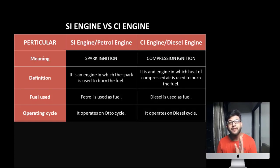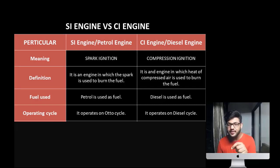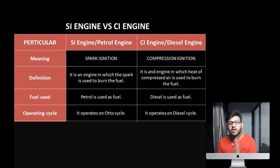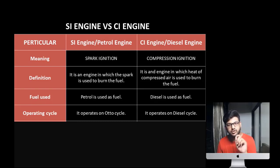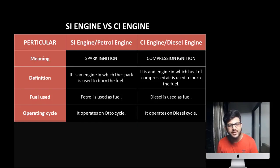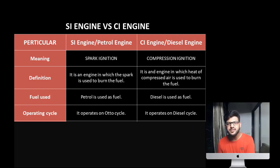In diesel engine there is the diesel cycle — one constant pressure and one constant volume process. Why do we not take constant volume in a diesel engine? Because in diesel engine we are adding air first, then injecting diesel into it. So when we are injecting diesel, the volume increases, and we cannot take constant volume. So in that case we take constant pressure. Temperature is always changing during combustion, so we take constant pressure process. The operating cycle is Otto cycle in petrol engine and diesel cycle in diesel or CI engine.